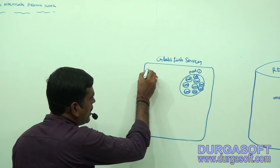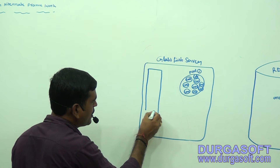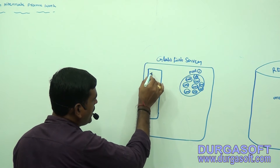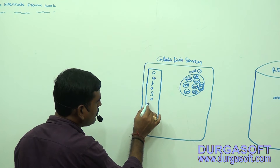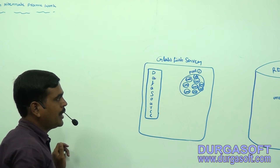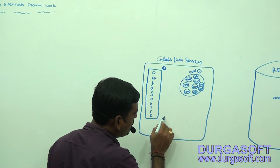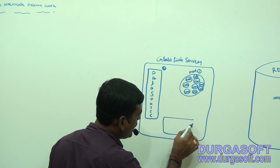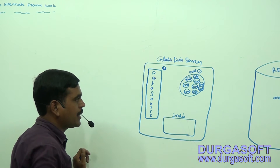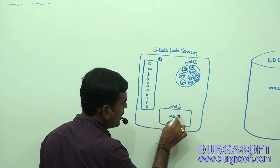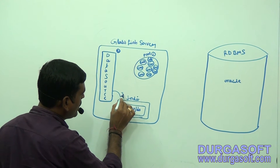After that, GlassFish server administrators are going to configure the DataSource. DataSource is an interface. After configuring the DataSource, they configure the JNDI name — Java Naming and Directory Interface — with a key such as DS.